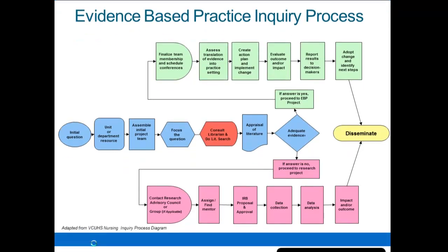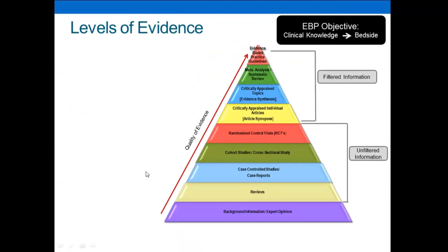One of the major things you're going to have to do is look at evidence — what is the evidence telling you? You're going to come across something called the evidence pyramid, which shows you the level of evidence. It starts at the bottom with background information or expert opinion, and works its way up. As it works its way up, you get primary research like randomized controlled trials, cohort studies, and case-controlled studies, and it continues up to systematic reviews, meta-analyses, and evidence-based practice guidelines.